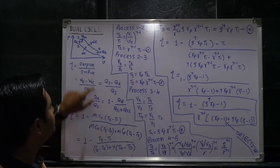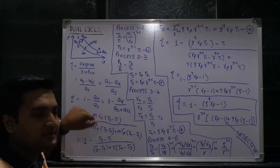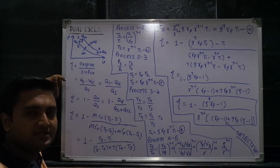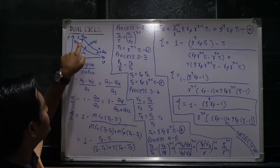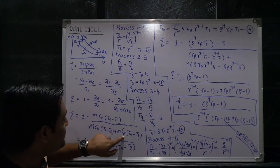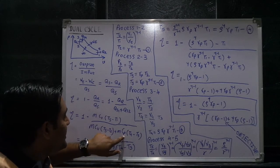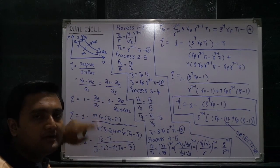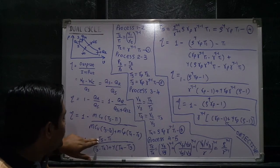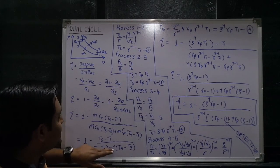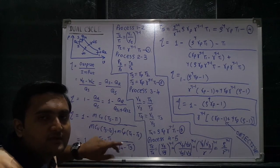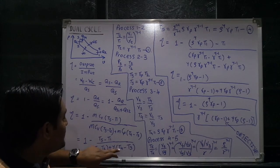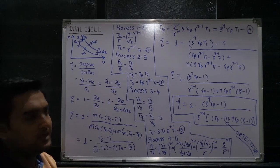The heat addition at constant pressure involves m·cp·(T4 minus T3). Taking m common and dividing both numerator and denominator by cv gives (T5 minus T1) divided by (T3 minus T2) plus gamma times (T4 minus T3), where gamma means cp divided by cv, with a value of 1.4. The goal now is to convert all temperatures T5, T4, T3, T2 in terms of T1 in order to derive the final efficiency equation.